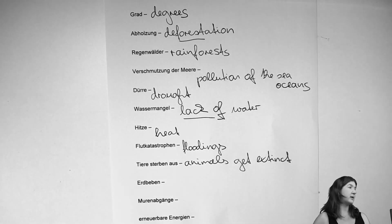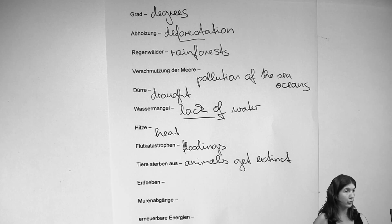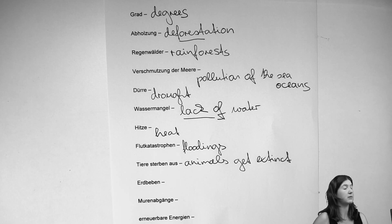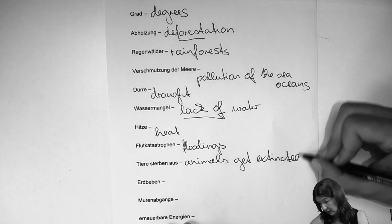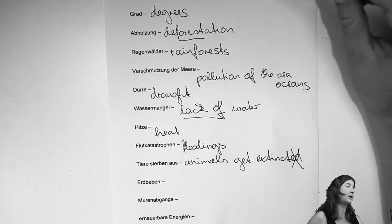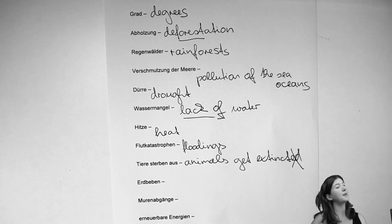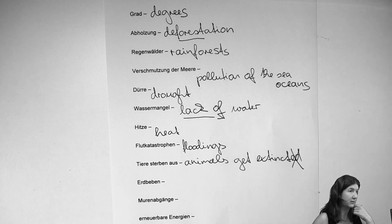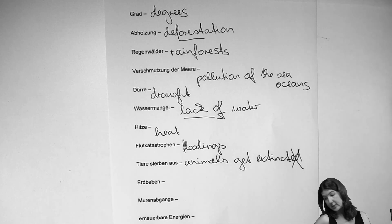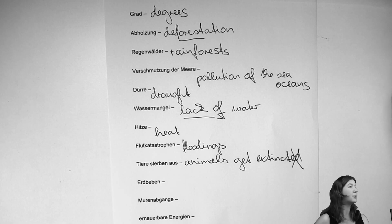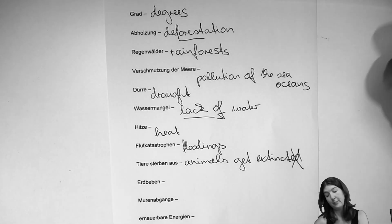Animals get extinct — make sure that 'extinct' is an adjective. Don't add anything to it. Sometimes in oral exams people think it's a verb and add '-ed' because that's the traditional ending for regular word forms in English. Make sure you don't. Animals get extinct — and that's a problem.